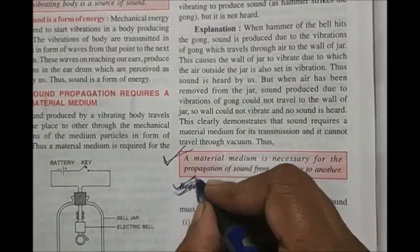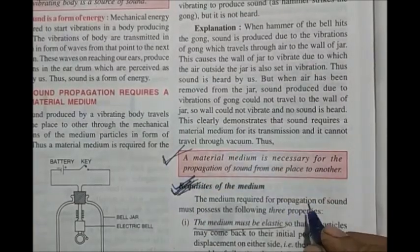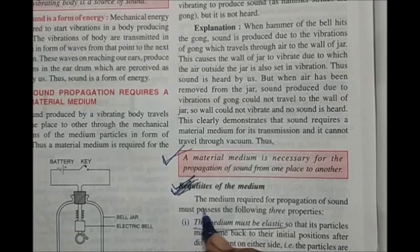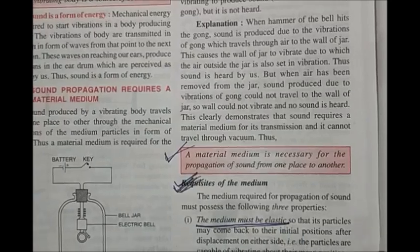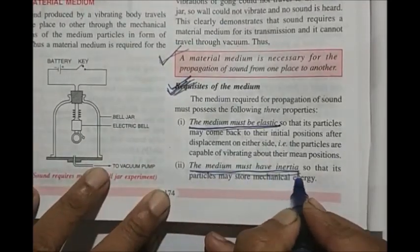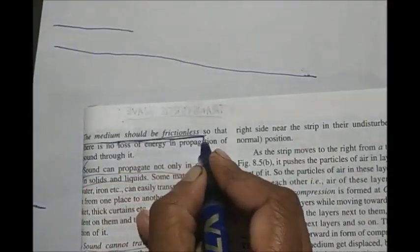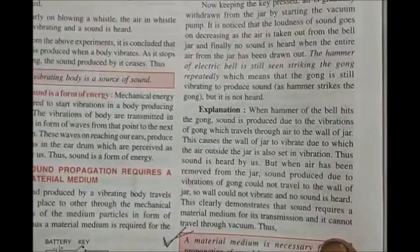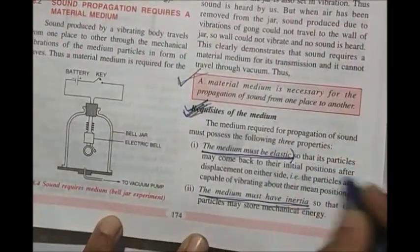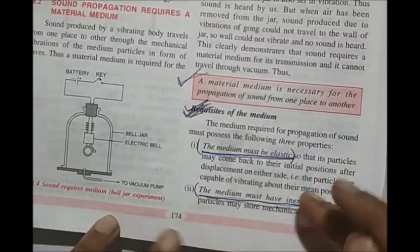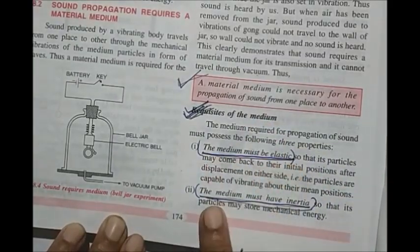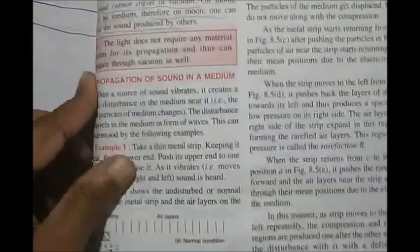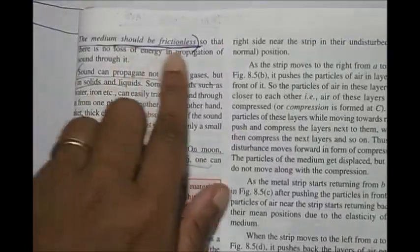The next thing is requisites of a medium — this question comes often. What are the requisites of a medium for the propagation of sound? First point: medium must be elastic. Second: medium must have inertia. And third: medium must be frictionless. If you write till this it is enough.